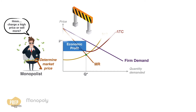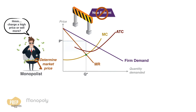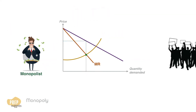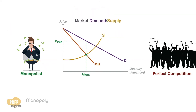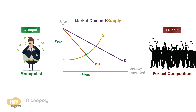Due to high entry barriers, monopolist profits do not attract new market entrants; therefore, long-run positive economic profits can exist. An obvious criticism of monopoly markets is that when compared to a perfectly competitive market, the monopoly market will produce less total output and charge a higher price.